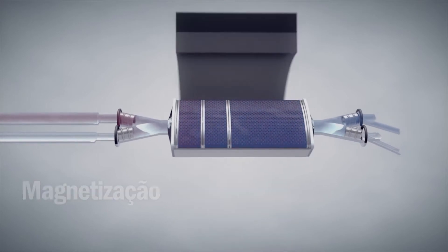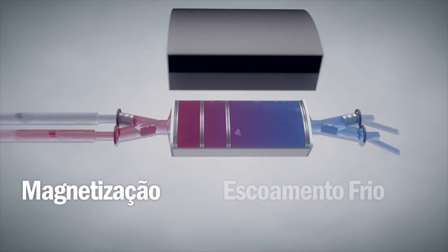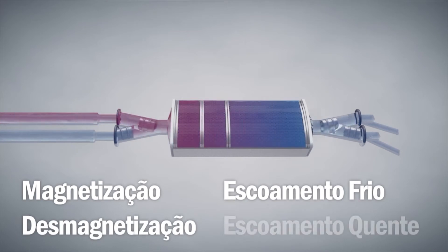The AMR cycle is composed of four steps: magnetization, cold blow, demagnetization, and hot blow.